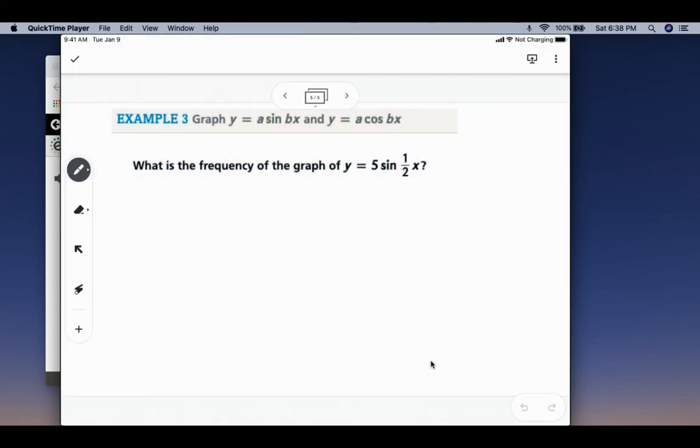So example three is to graph y equals a sine of bx and y equals a cosine of bx. We're going to talk about what is the frequency. The frequency is the reciprocal of the period. If we're finding the period, we're going to take 2 pi over b. And in this case, our b is 1 half.